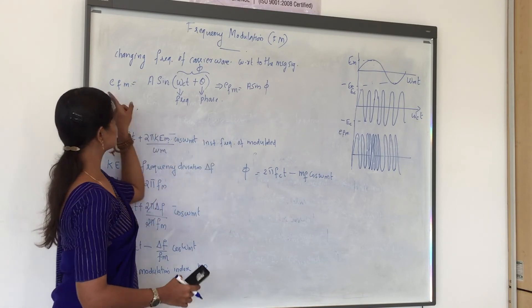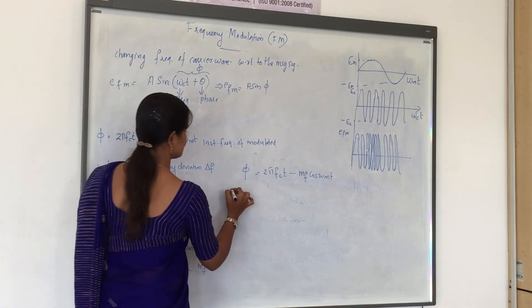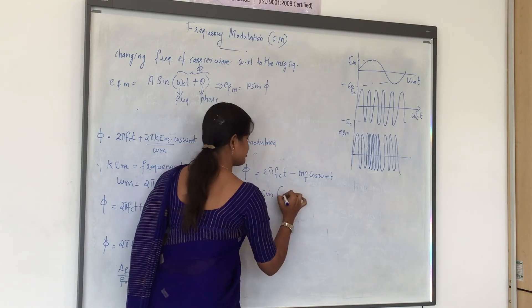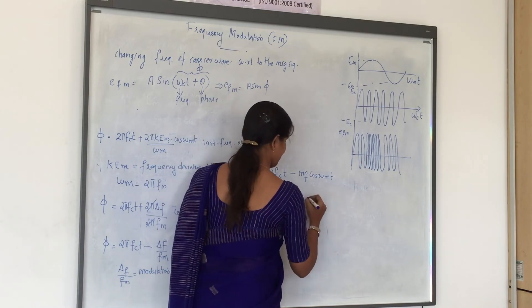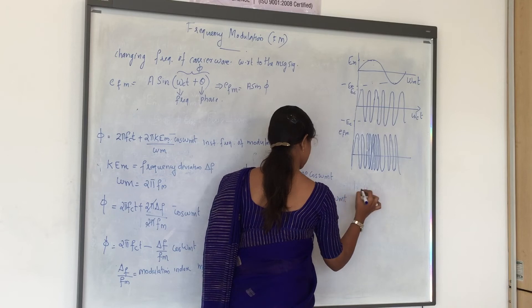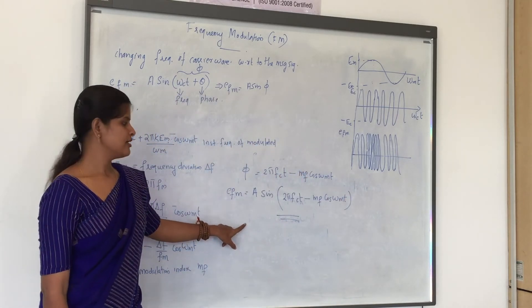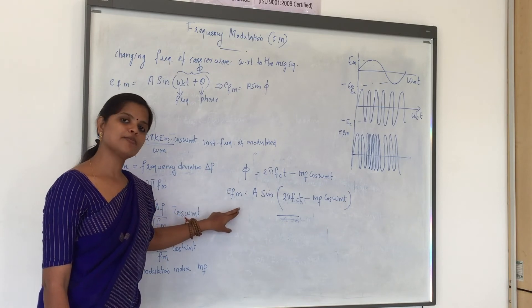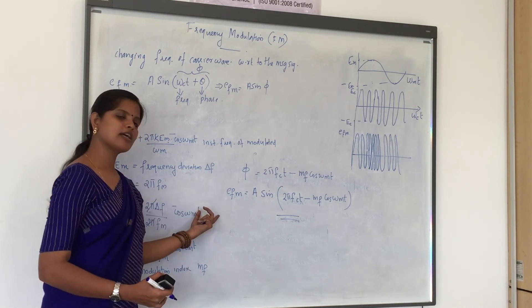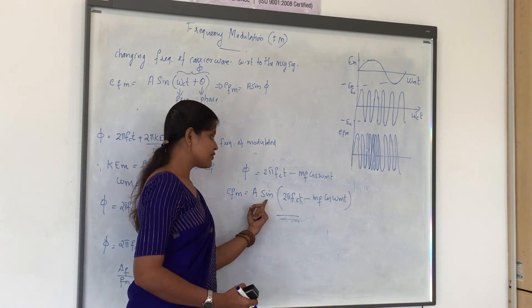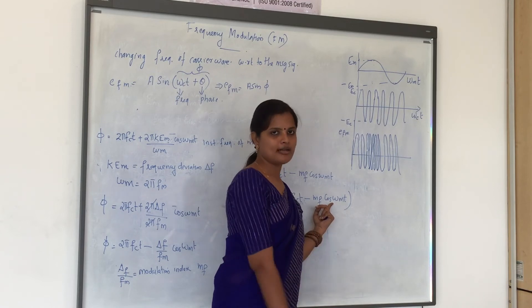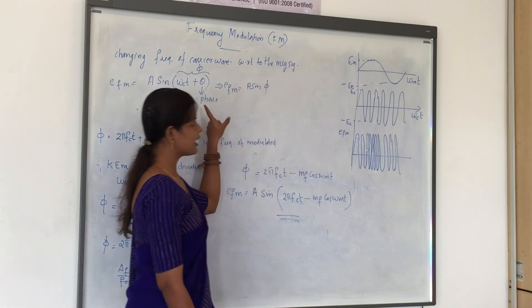Substituting phi back into EFM = A sin(phi), the final formula for the frequency modulated wave is: EFM = A sin(2πFCt − Mf cos(ωmt)). Instead of a sine carrier, you can also take a cosine wave — the only difference is that sine becomes cosine and cosine becomes sine. Either way you can derive this equation. That is all about frequency modulation.